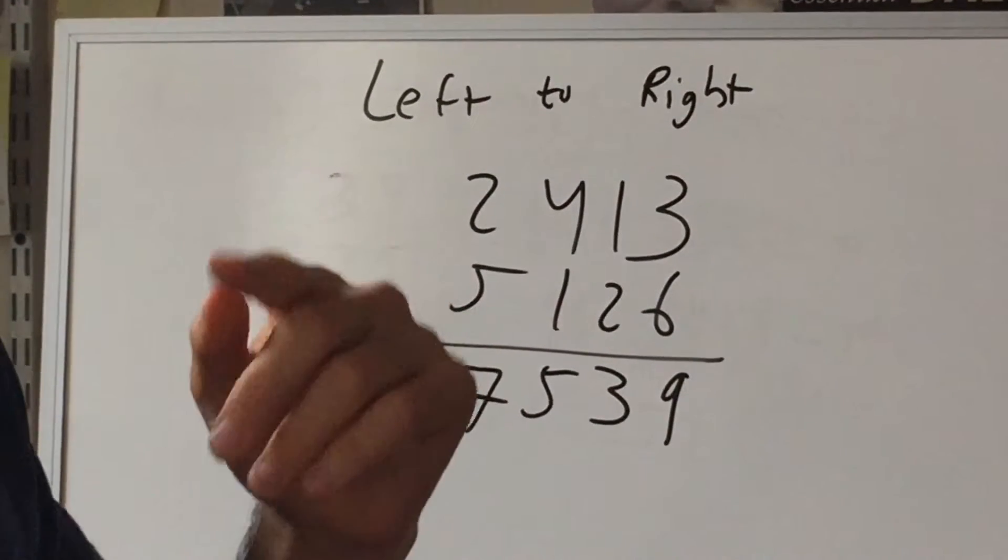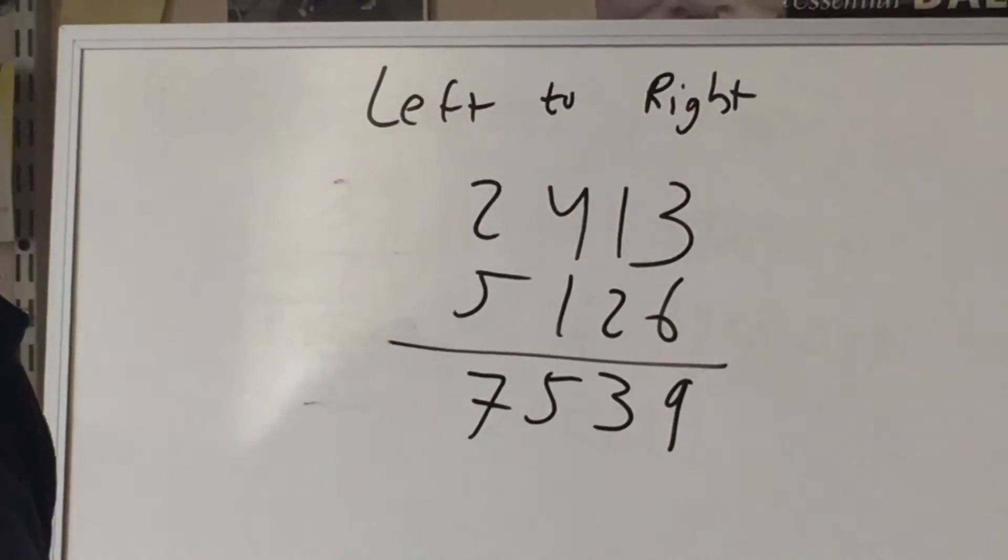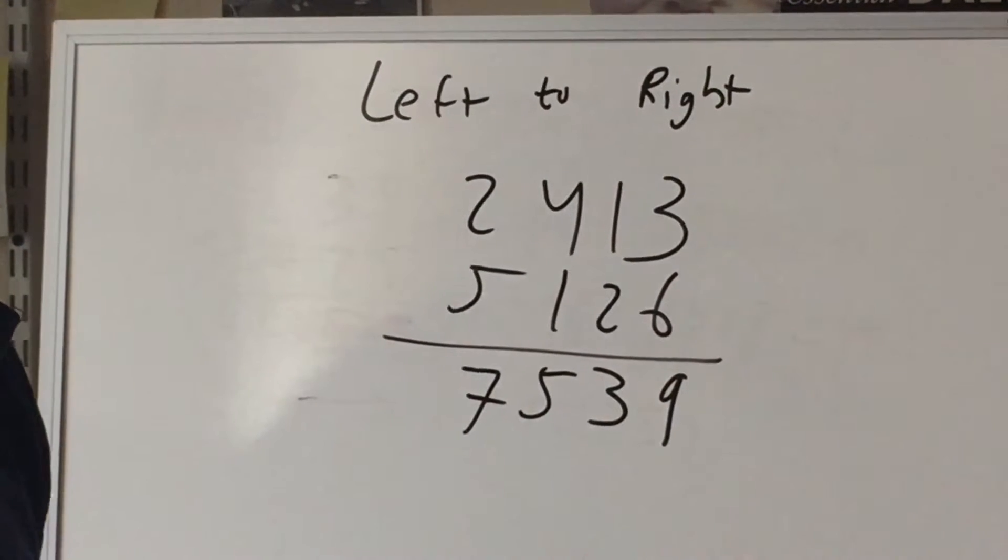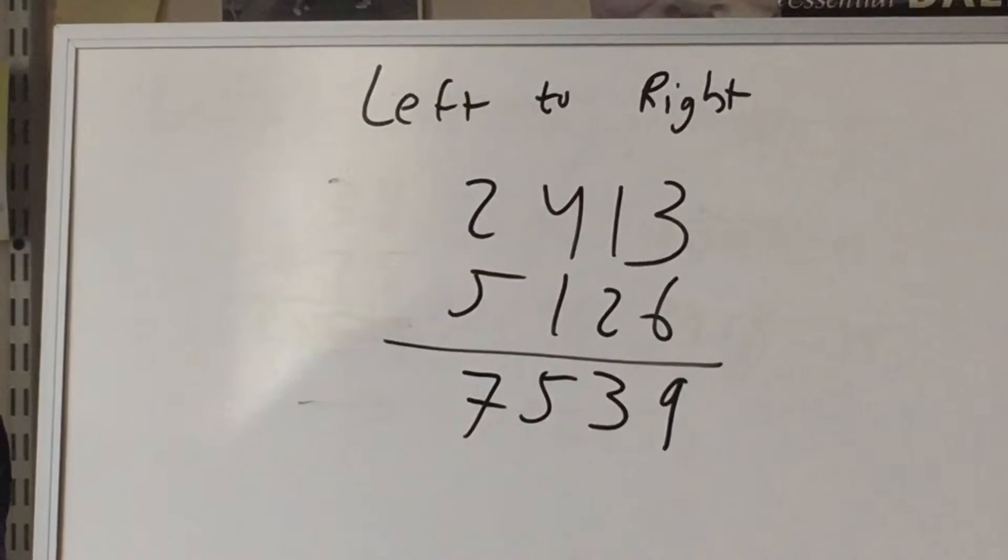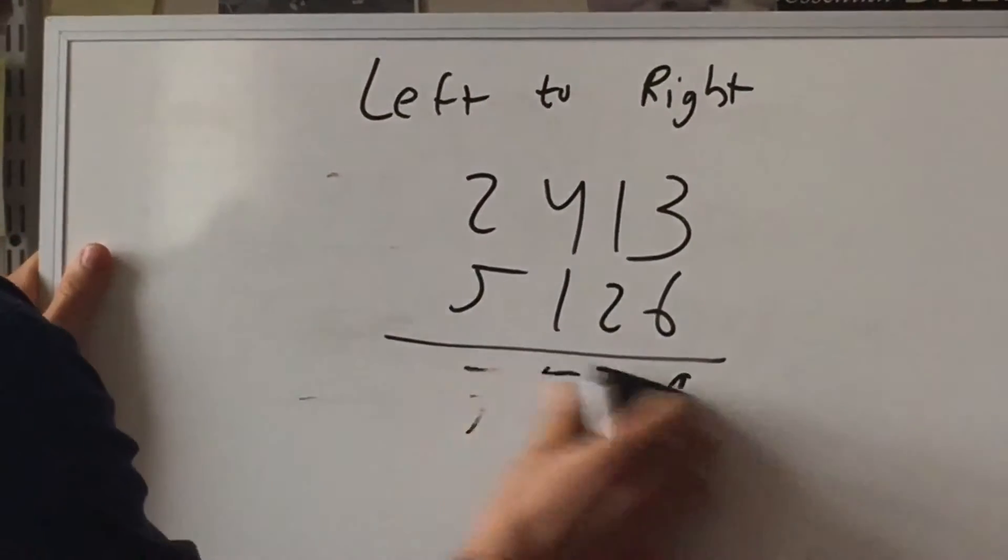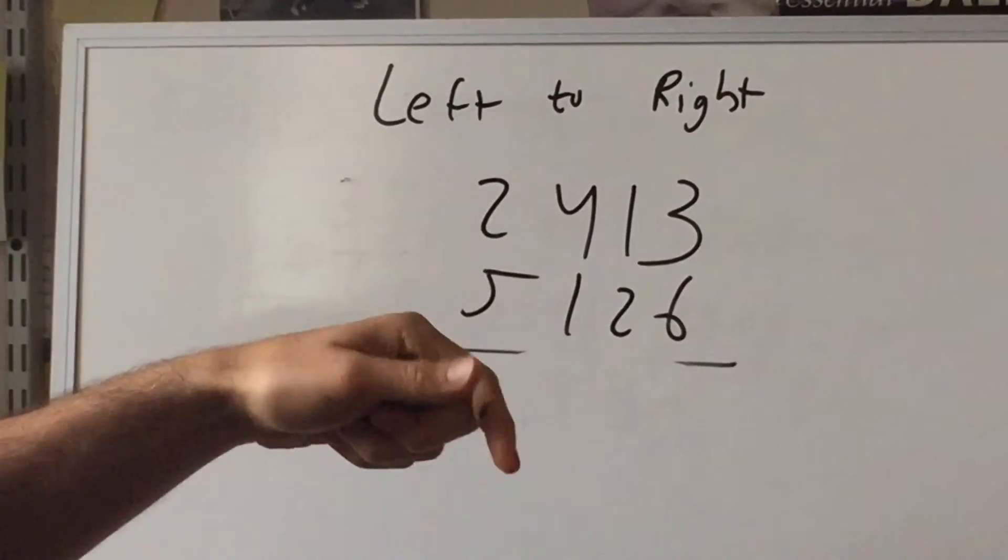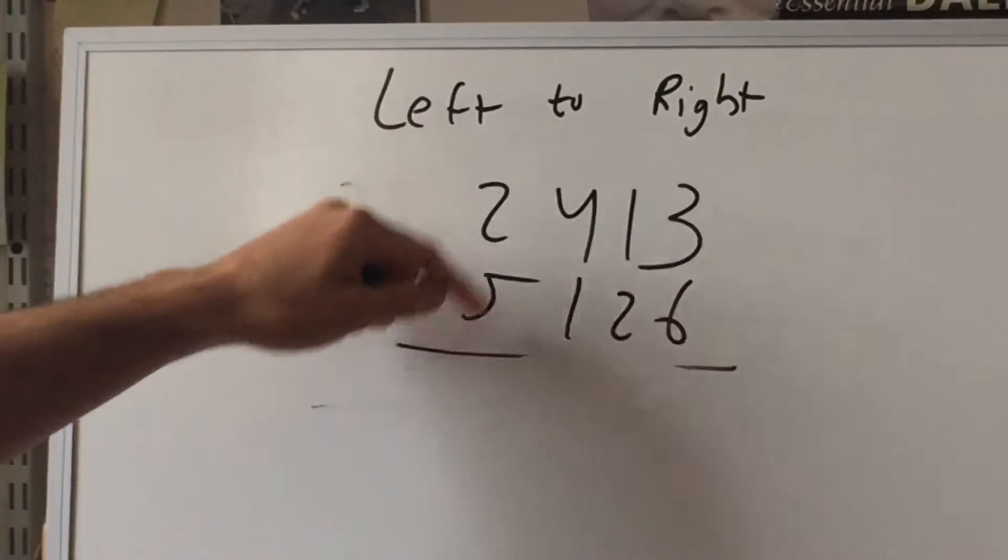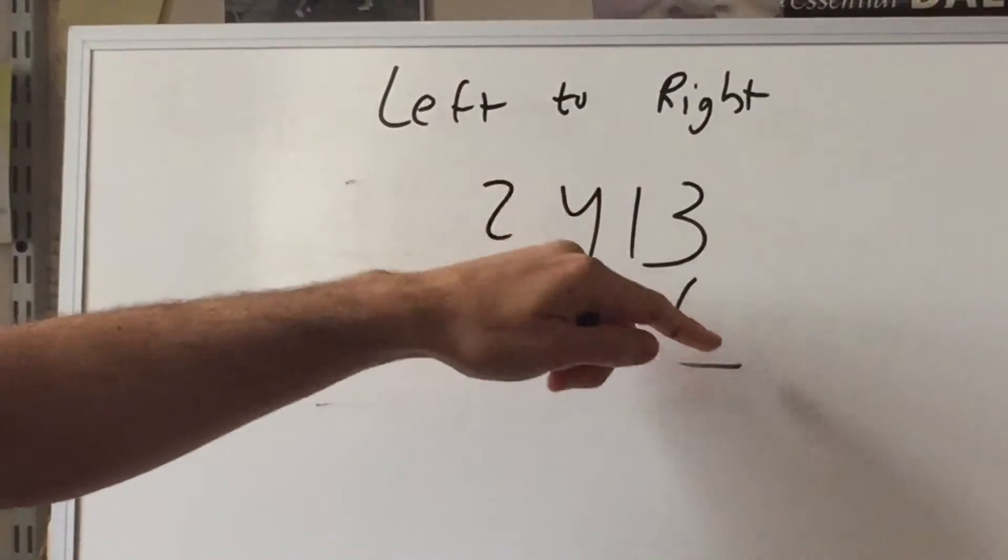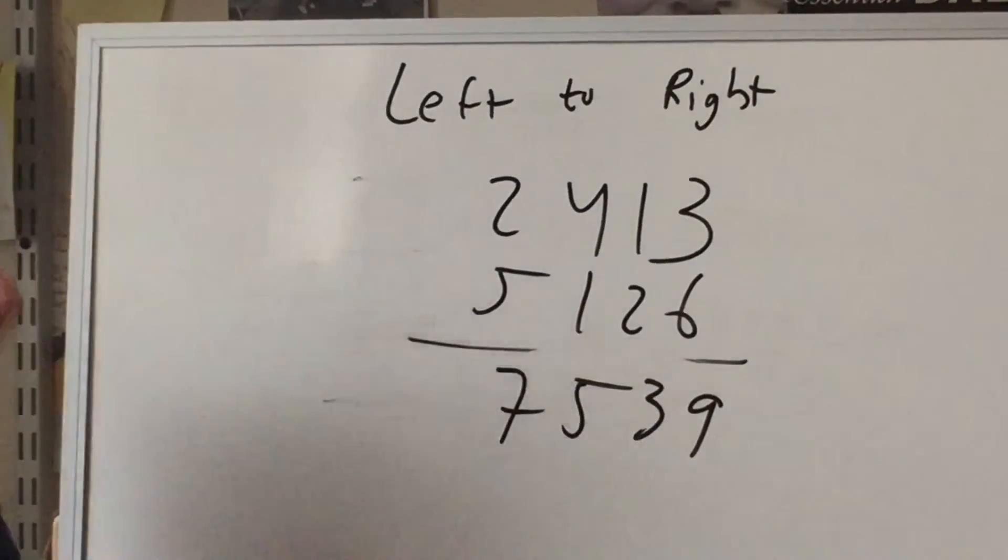I don't know how many of you can recite the ABCs backwards fast. I can't do that. If I give you a long string of digits and ask you to recite them backwards gets pretty difficult. So that's why when we do this I want you guys to start calculating it in the way you recite it. So it would be seven thousand five hundred thirty nine.